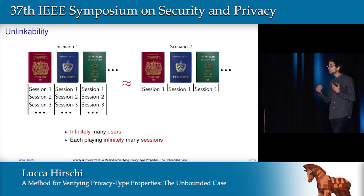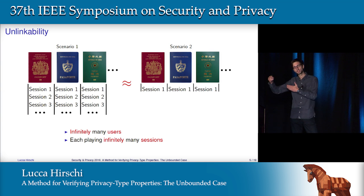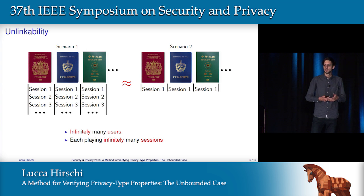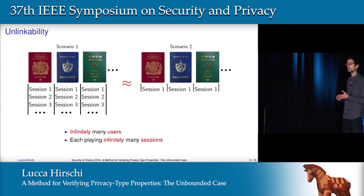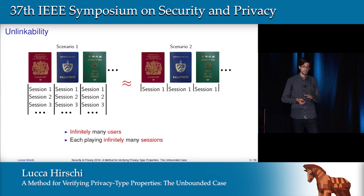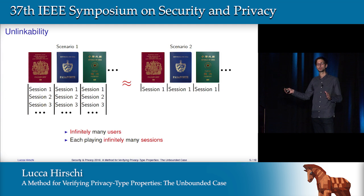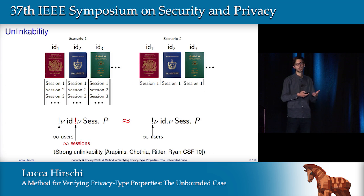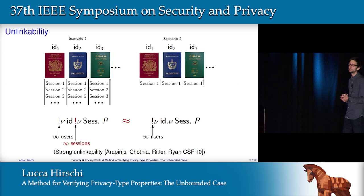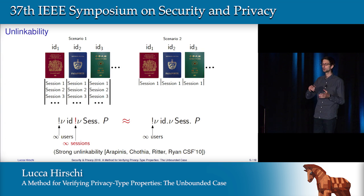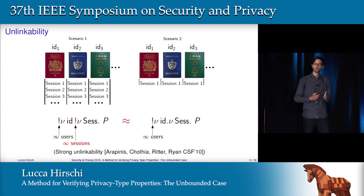But the problem is maybe there is no attack for two users or two sessions, but there is an attack for more sessions — maybe four, five, or six. We don't know in advance. That's why we consider much more complex scenarios with infinitely many users and infinitely many sessions. The main ideas are the same: we have two scenarios. In the first one, we consider infinitely many users, and each one can play infinitely many sessions. While in the second scenario, we still have infinitely many users, but now each user can play at most one session. We can encode this into our process algebra using replication and creation of names. For the first scenario, we will have two replications: the first one creates infinitely many users, and the second one creates infinitely many sessions. This is strong unlinkability as defined in a CSF 2010 paper, and this is what we want to verify.